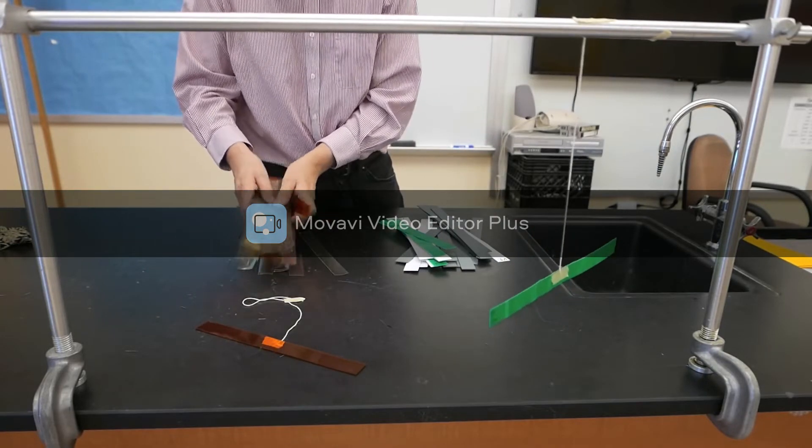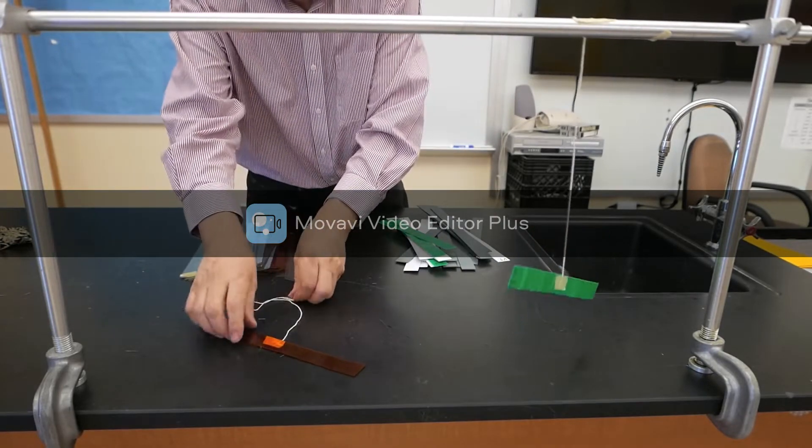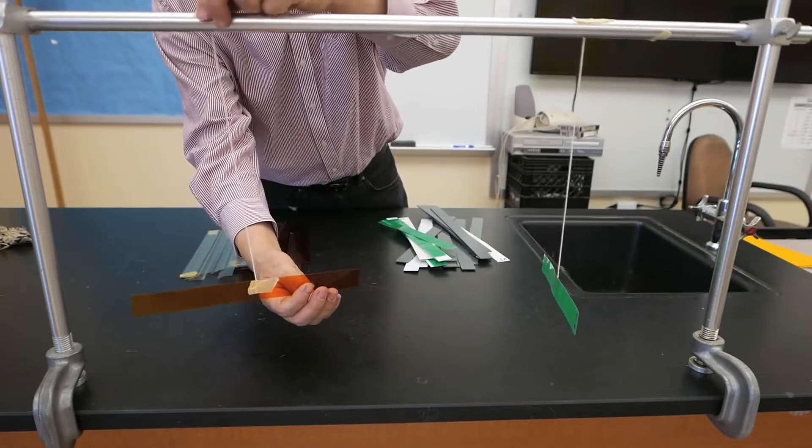The second material is acetate. Once again, they would have two pieces. They would hang one of the pieces up from a bar or a table.